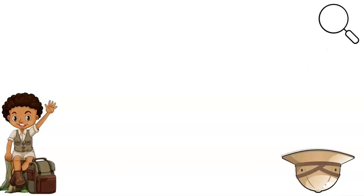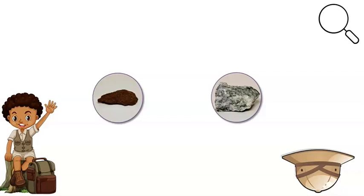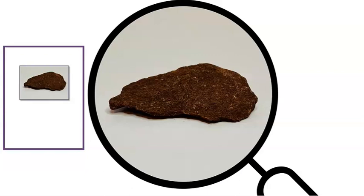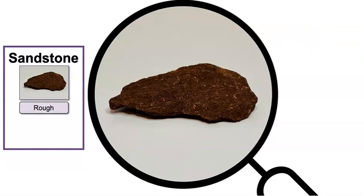Two land samples left. Let's take them out together. Hmm, which one should we start with? We will observe this one first. This sample is called sandstone. Imagine you can feel the sandstone with your hand. What do you think it feels like? Whoa! Sandstone feels rough. What color is the sandstone? Did you say red? If so, great work. Sandstone also looks like it is made up of tiny pieces of sand stuck together.